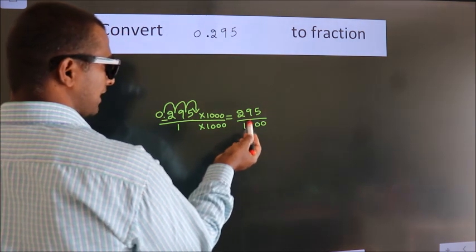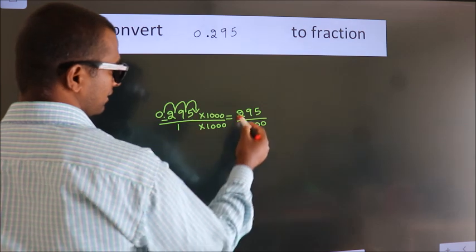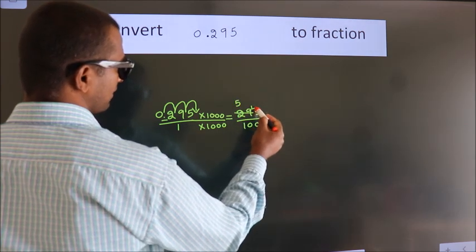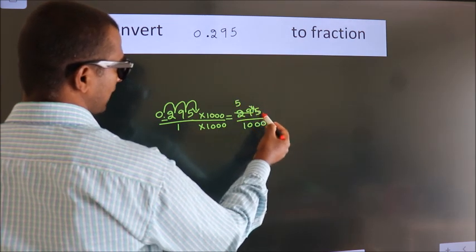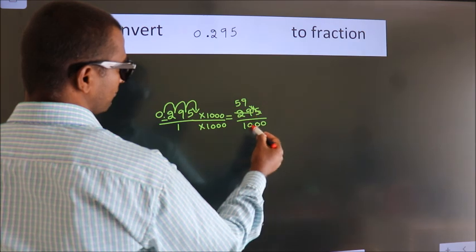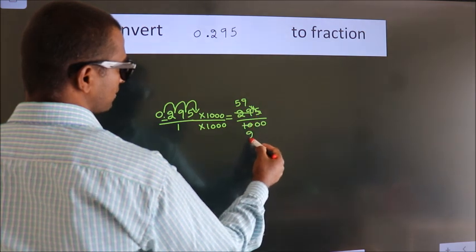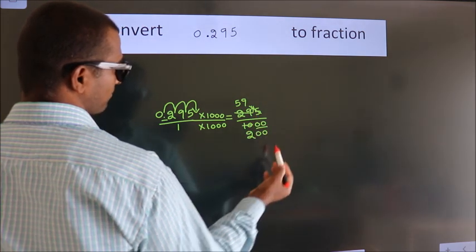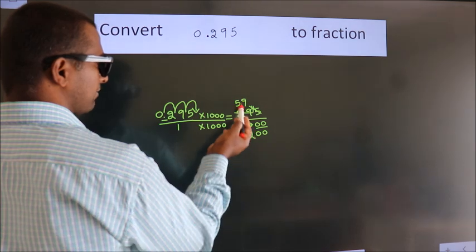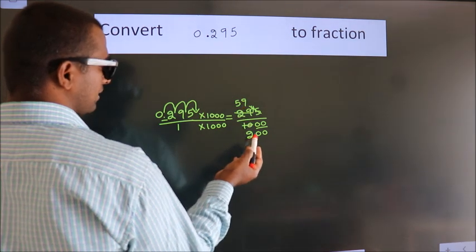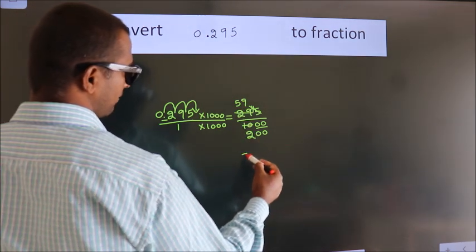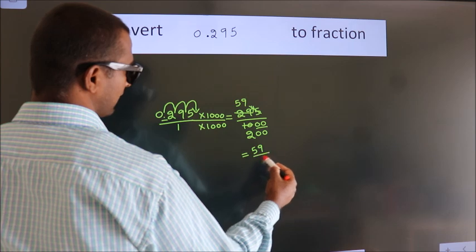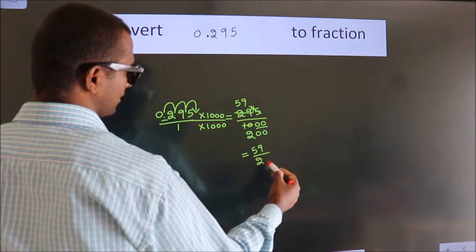Now, I cancel with 5. Five 5s, five 9s, five 2s. These zeros stay as they are in the denominator. Cannot simplify any further. So our fraction is 59 by 200.